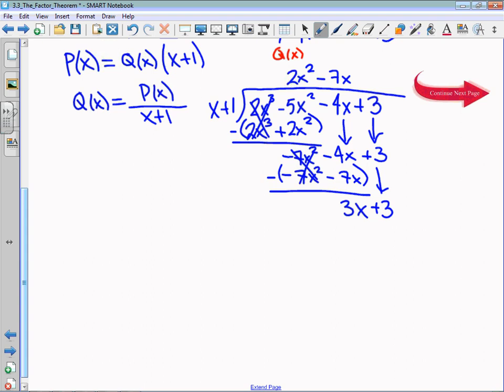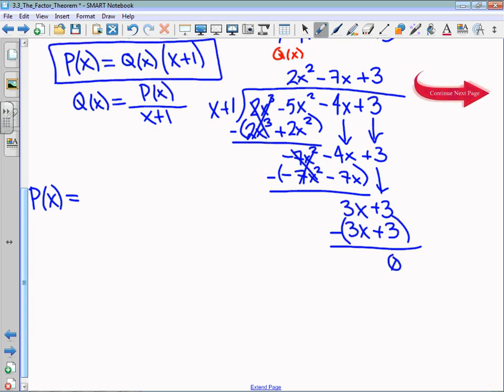3x divided by x is positive 3. I multiply that back on, and when I do the subtraction, I get my 0. Now what I can say is the polynomial, and I'm not going to write the polynomial this many times, so I'm just going to write P(x) equals, and I'm going to use this division statement. Because now we know what Q(x) is. Q(x) is 2x² - 7x + 3, and we used x + 1 as a means to an end to get there.